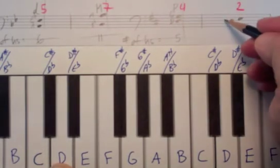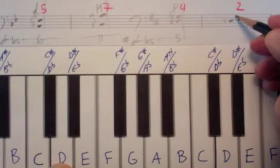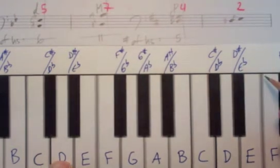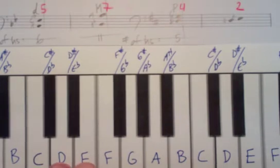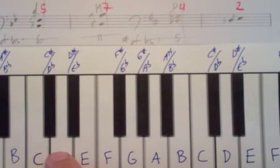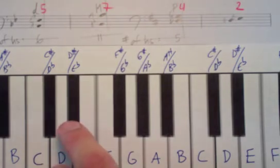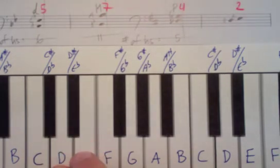Last but not least. We have D going up to E — staying on the same D, going up to E right next to it. Count the half steps: one, two.